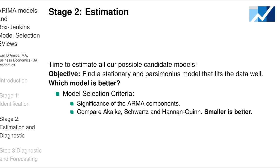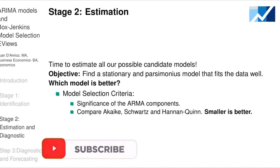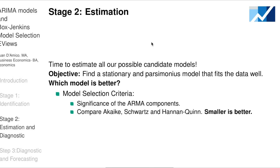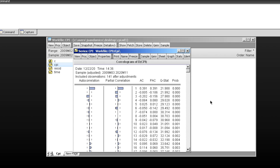Now stage two is estimation. It's time to estimate all our possible candidate models: ARIMA(1,1,1) and ARIMA(1,1,3). The objective is to find a stationary and parsimonious model that fits the data well. We estimate them and check that the ARMA components are significant, then compare the Akaike, Schwartz, and Hannan-Quinn criteria — the smaller criterion indicates a better model.